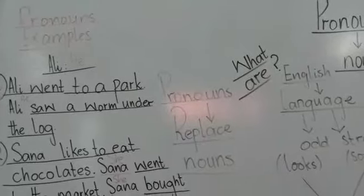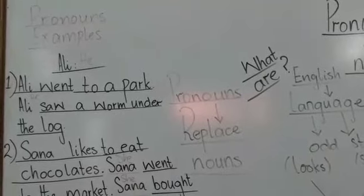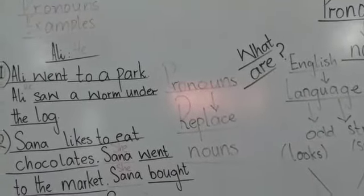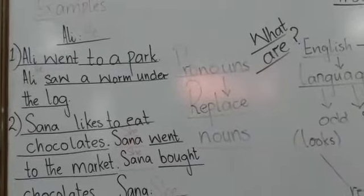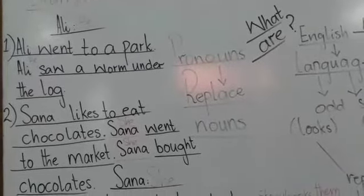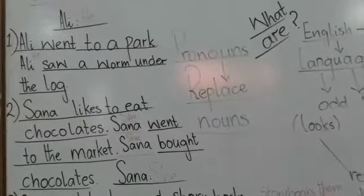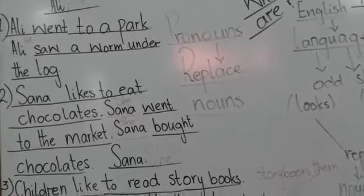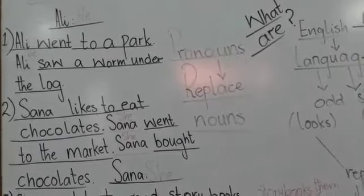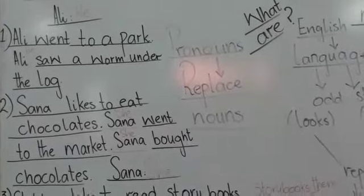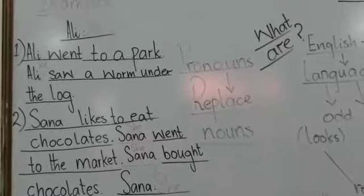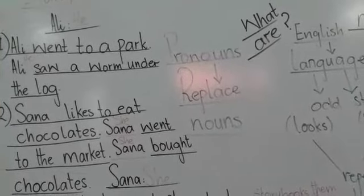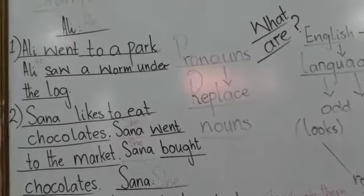Now understand the pronouns with examples. Number one: Ali went to a park. Ali saw a home under the log. In this example, we are repeating the noun Ali again. So we will replace Ali with 'he'. Read with me: Ali went to a park, he saw a home under the log.